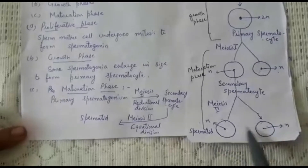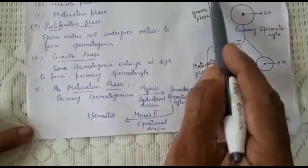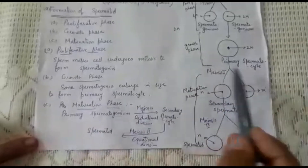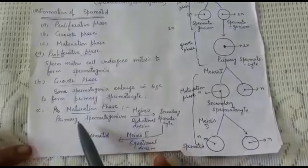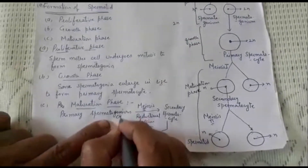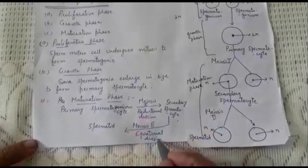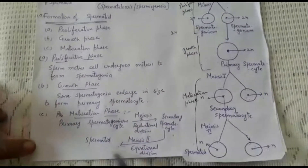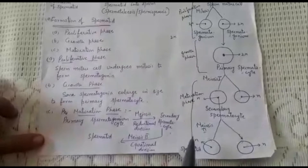To summarize: in the proliferative phase, the sperm mother cell undergoes mitosis to form spermatogonia. In the growth phase, spermatogonia enlarge to form primary spermatocytes. In the maturation phase, primary spermatocytes divide by meiosis I to form secondary spermatocytes, which then divide by meiosis II to form spermatids. So one sperm mother cell produces four spermatids through these phases. This completes the first phase of spermatogenesis; the second phase will be covered in the next video.